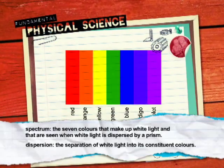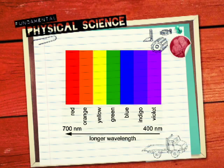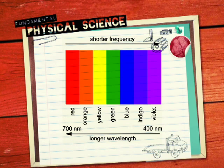The colour of light is related to its wavelength. Visible light is made up of wavelengths that range between 700 nm and 400 nm. Red light has a longer wavelength of 700 nm and is refracted less by the prism than violet light, which has a shorter wavelength of 400 nm. The colours in between have wavelengths between 400 nm and 700 nm.